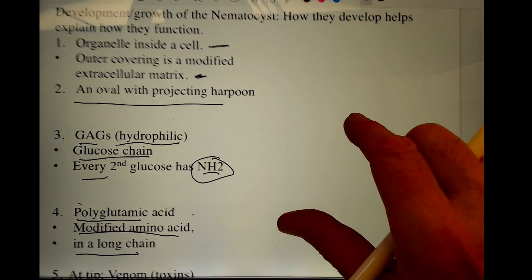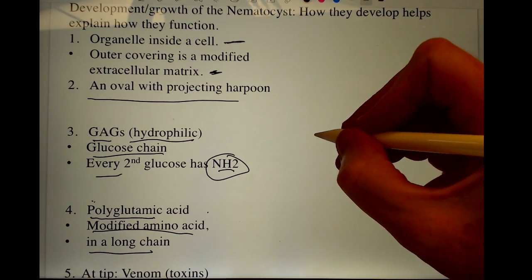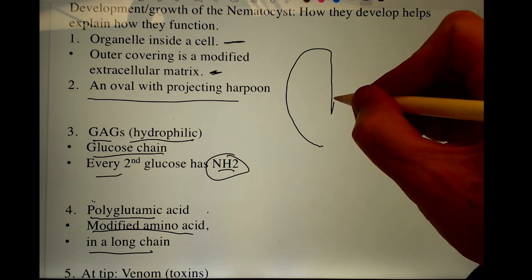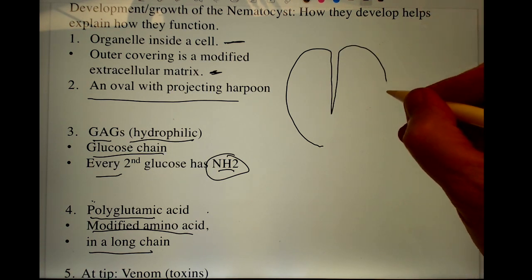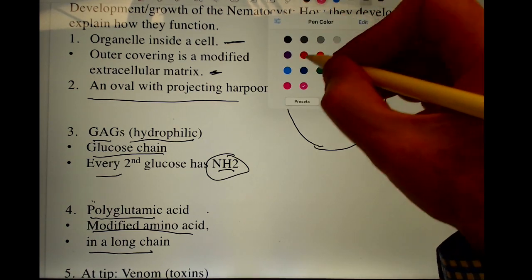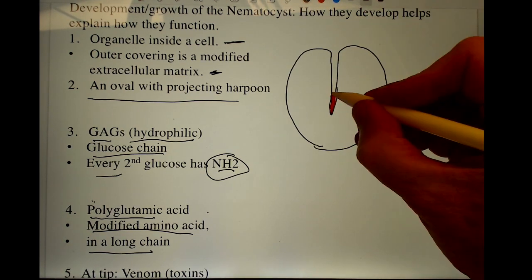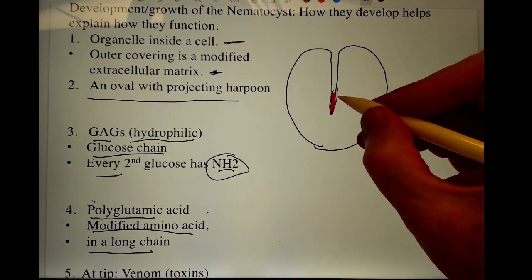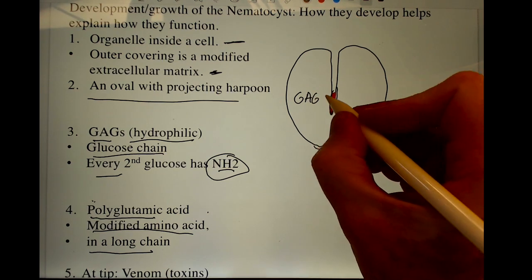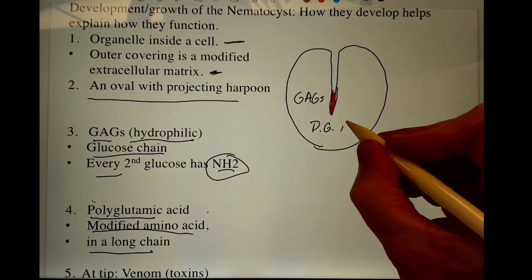So let's talk about how they function. To draw one in the simplest way would be to do this. This is going to be the tip. We'll put some venom in here. The venom is technically outside of this part of the nematocyst. This is all these GAGs and polyglutamic acid.